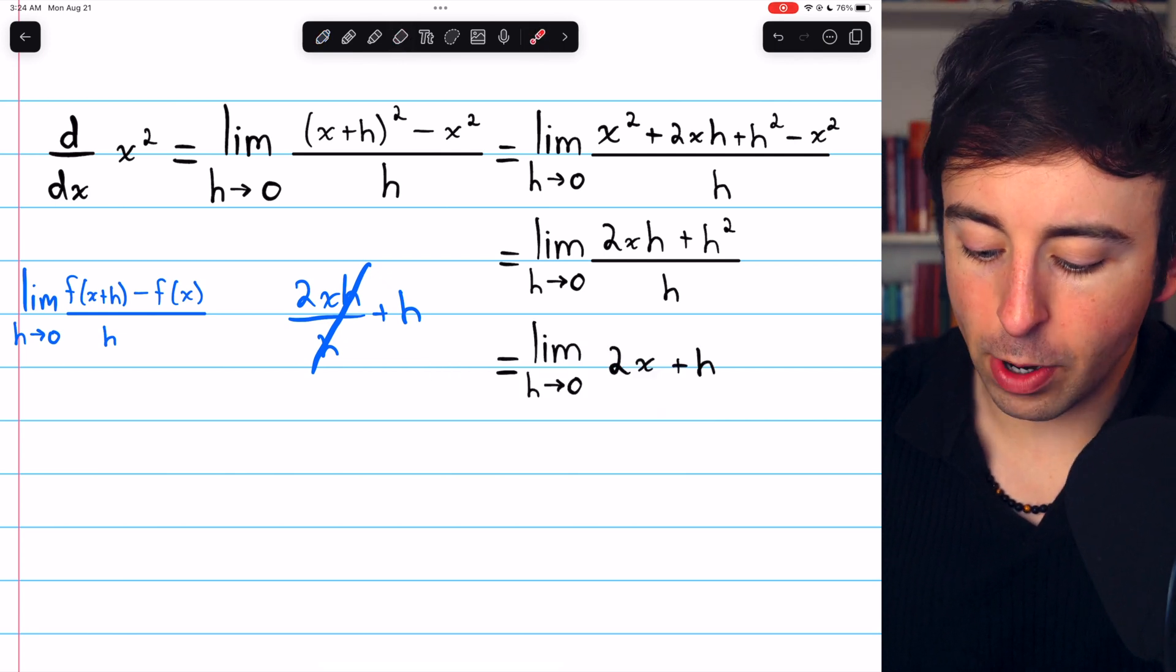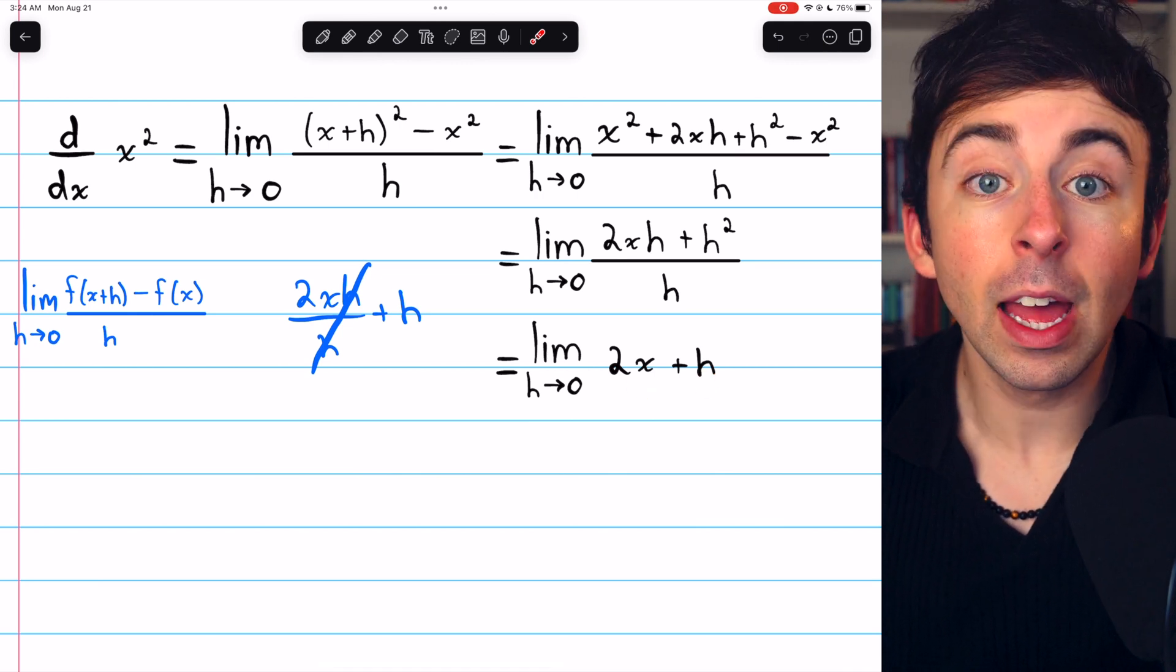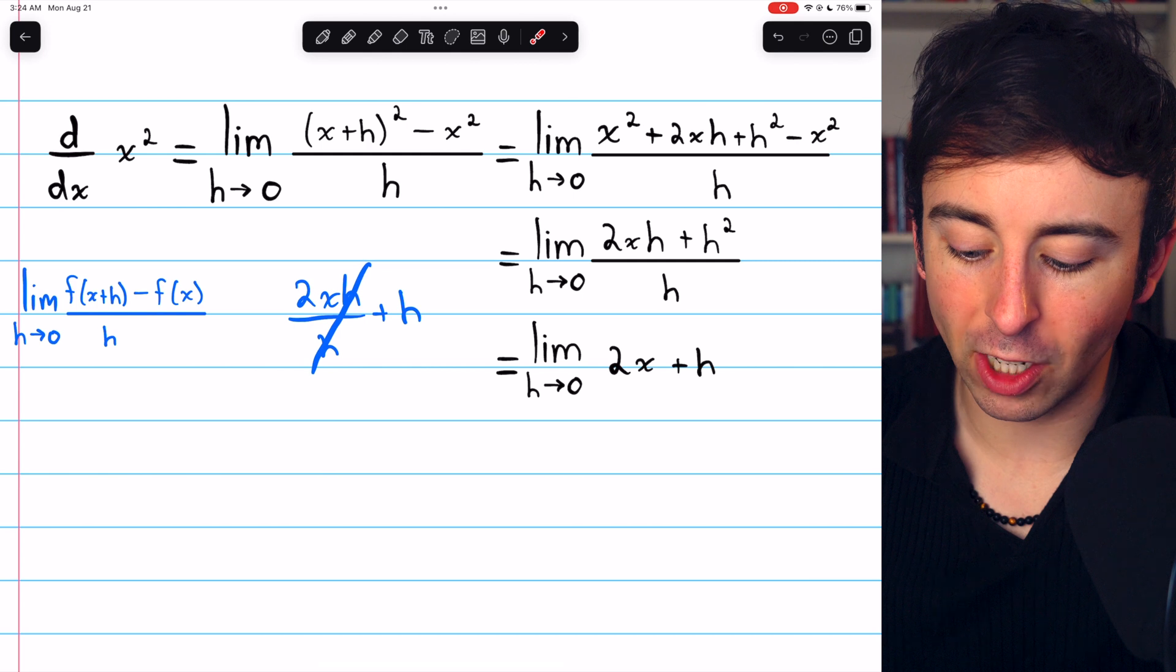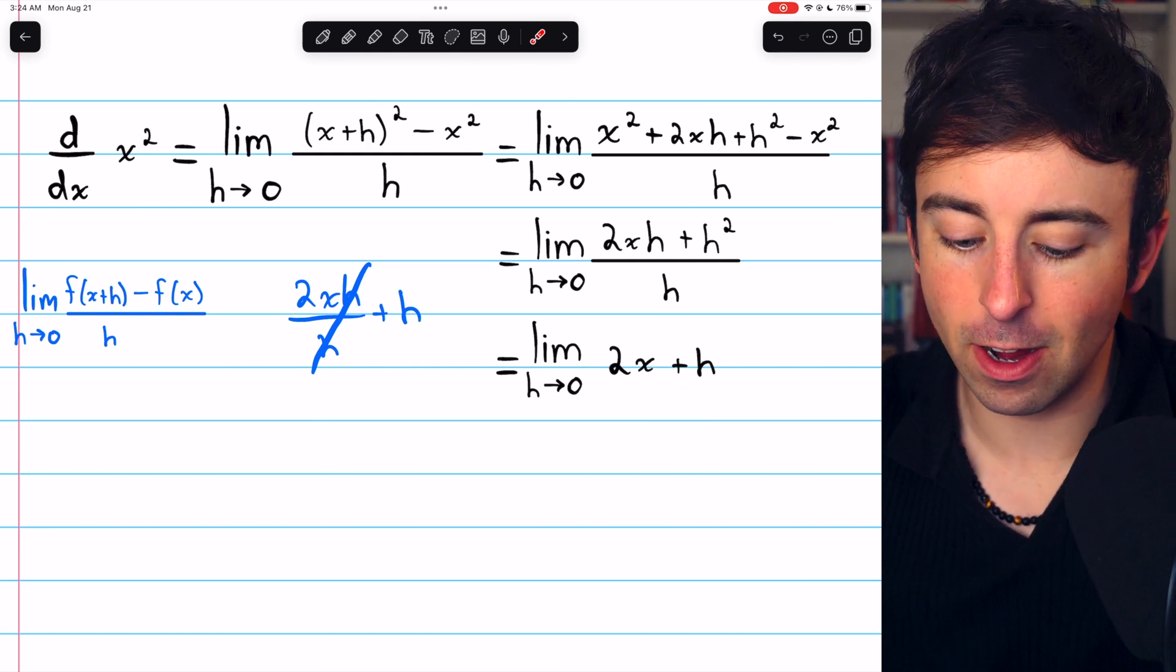Regardless, what we end up with is the limit as h approaches zero of 2x plus h. Again, this division by h just got rid of a factor of h in both these terms. That's how we get here.